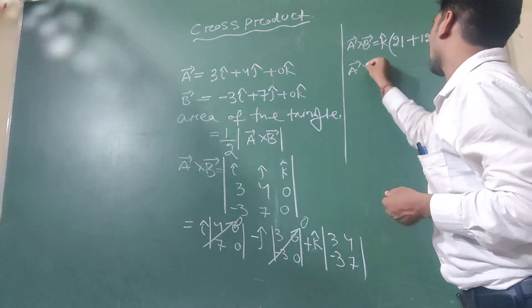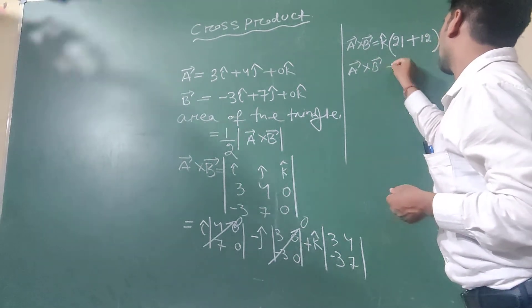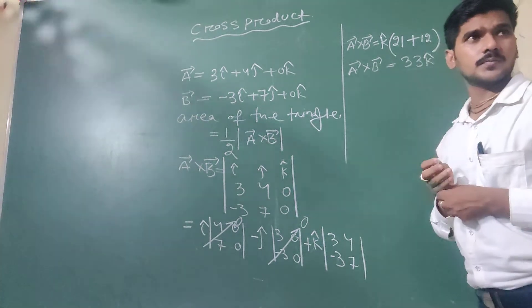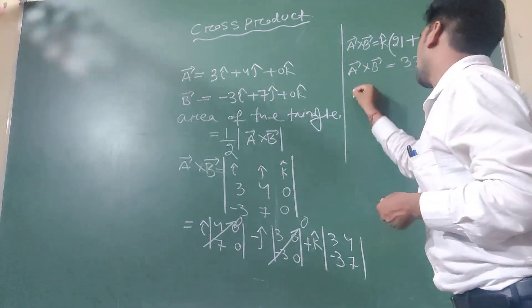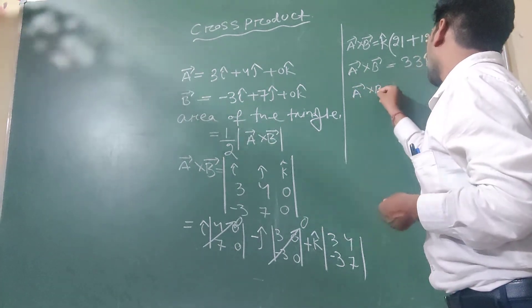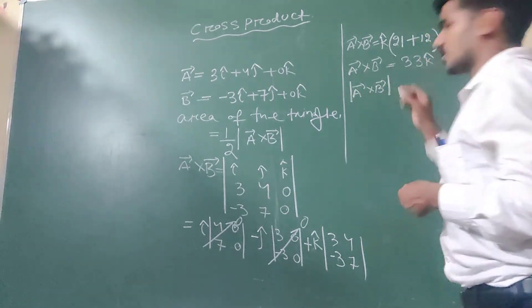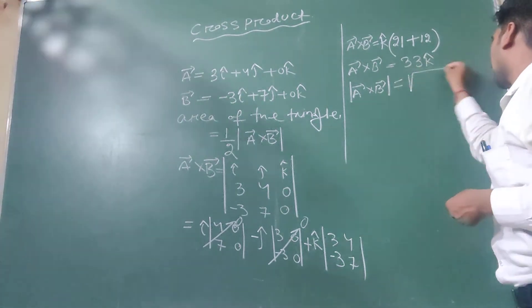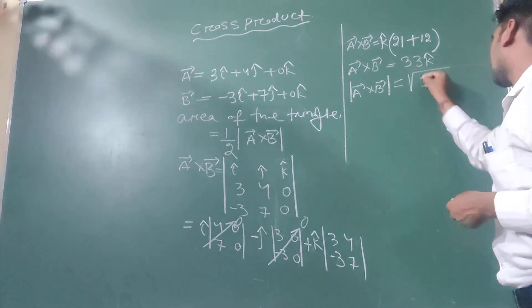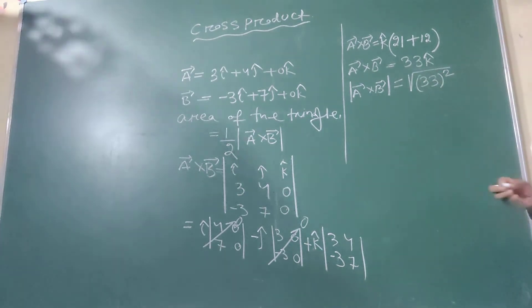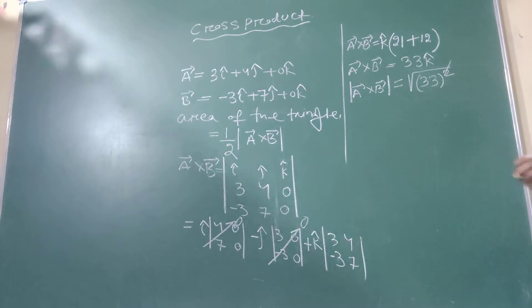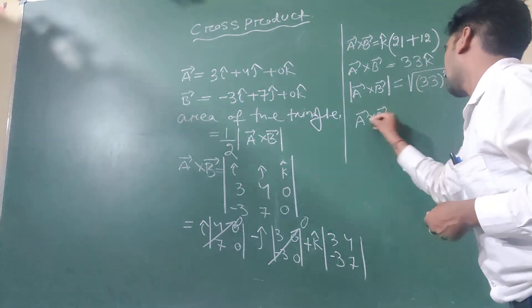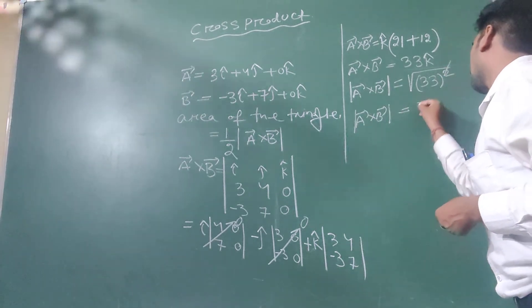So A vector cross B vector equals 33 K cap. Therefore the magnitude of A vector cross B vector equals the square root of 33 squared, which equals 33.